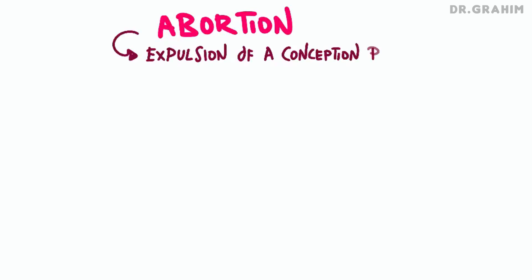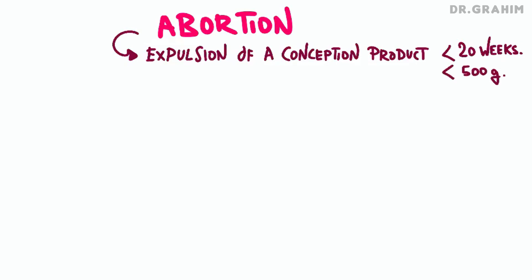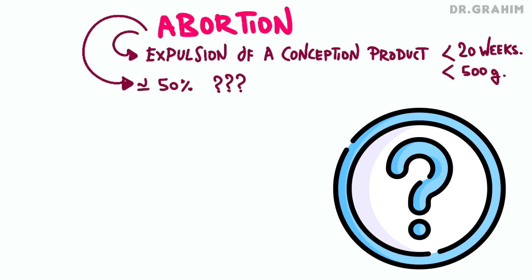Just a quick reminder. Abortion is defined as the expulsion of conception products before the fetus reaches the age of viability, set at 20 weeks of amenorrhea, or a weight of less than 500 grams. It can be caused by a variety of factors, but in about 50% of cases, the exact cause remains unknown.